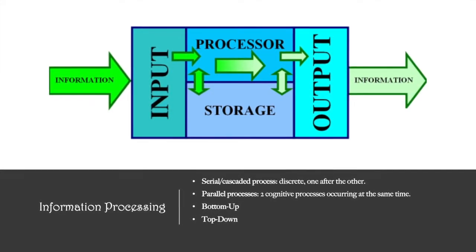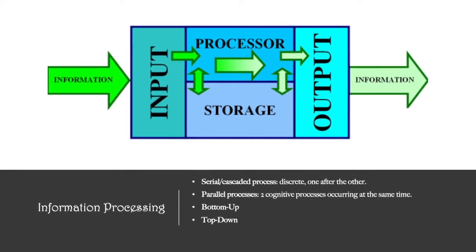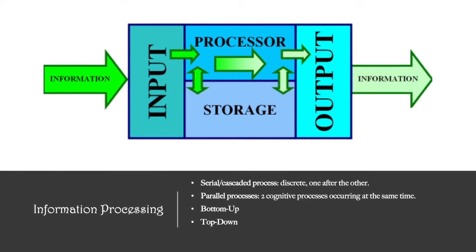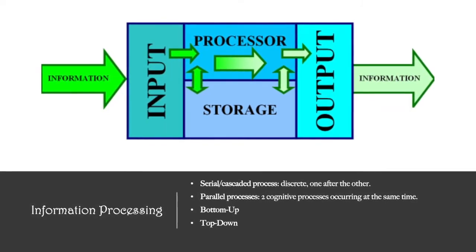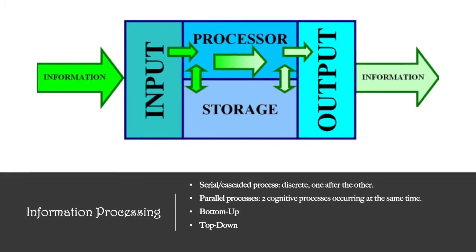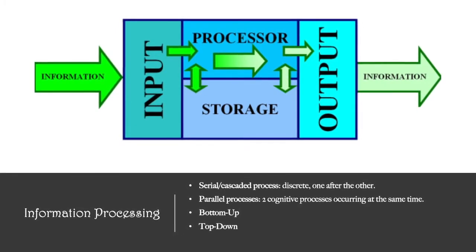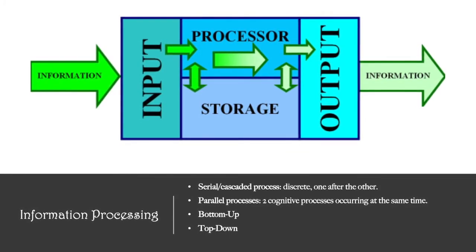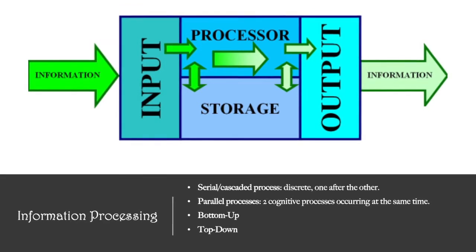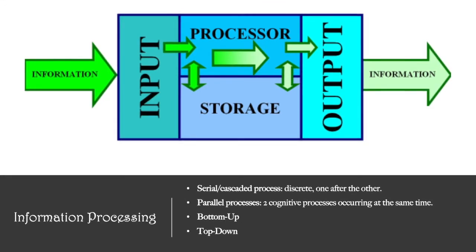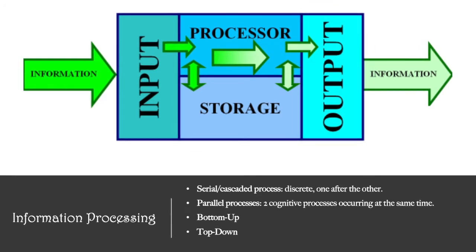There are many different ways of information processing. There are serial or cascaded processes, which include discrete cognitive processes that occur subsequently one after the other. There are also parallel processes, which are two cognitive processes that occur at the same time. There are bottom-up processes whereby sensation and perception influence higher-end cognitive processes, and top-down processes where higher cognitive elements influence the way you perceive the world.